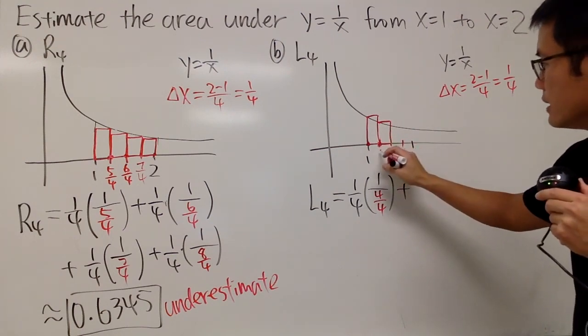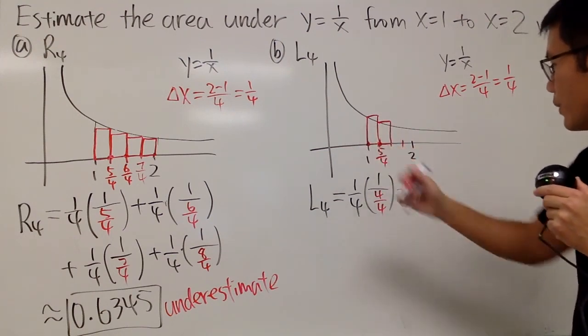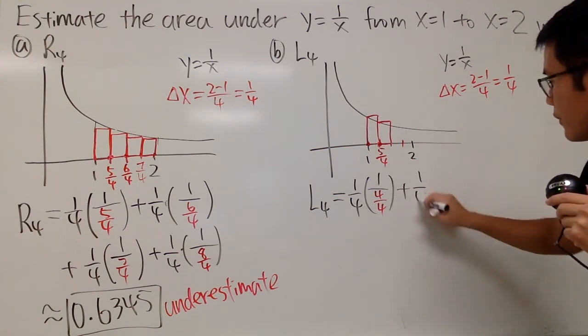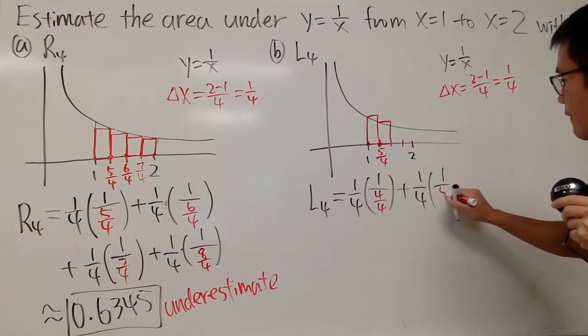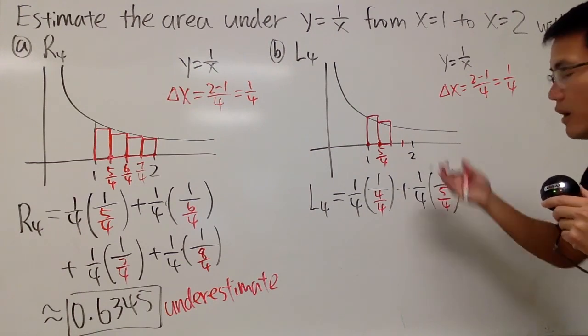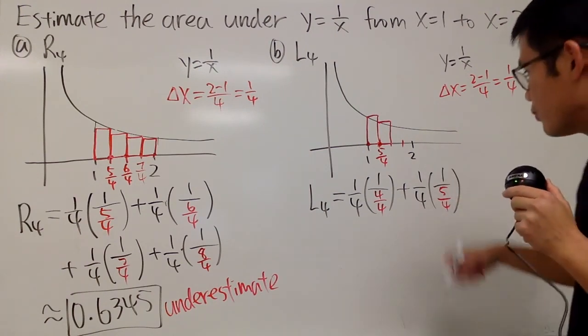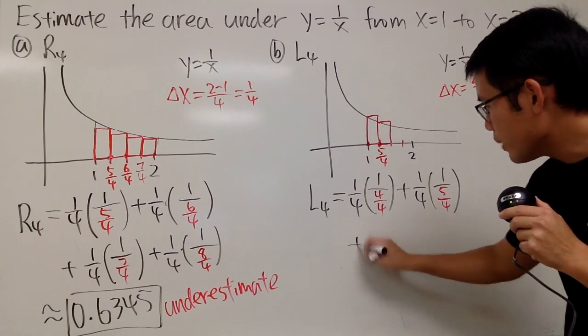So when we use this, this right here is 5 over 4, the one that we got over there, which is 1 over 4 times 1 over 5 over 4 for the area of the next left-hand rectangle. Next one,